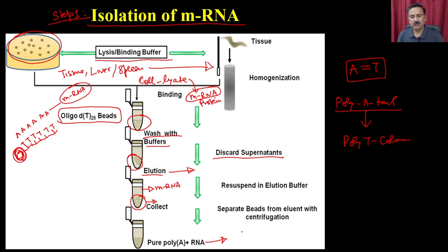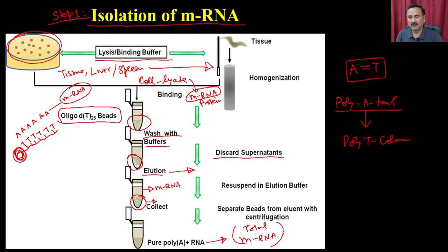Most messenger RNAs have a poly-A tail. After isolating the total messenger RNA from the cell, you use it for synthesis of cDNA — synthesizing complementary DNA from all these messenger RNAs.